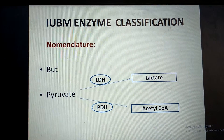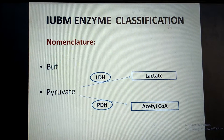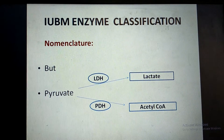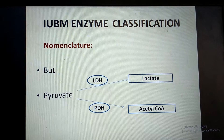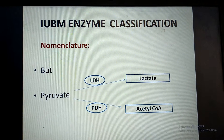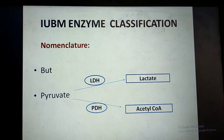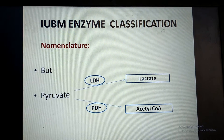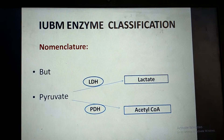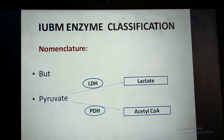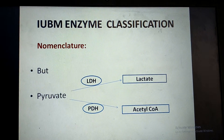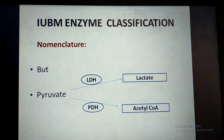But later on, when more and more enzymes were discovered, it was found that many enzymes act on the same substrate. For example, lactate dehydrogenase and pyruvate dehydrogenase both act on the substrate pyruvate to form different products. Therefore in this case the suffix -ASE is not sufficient to name these enzymes.